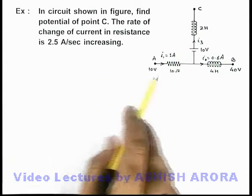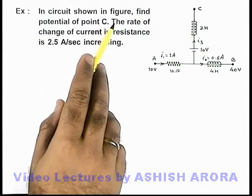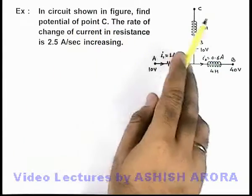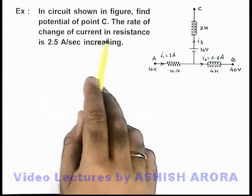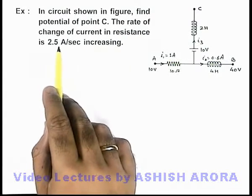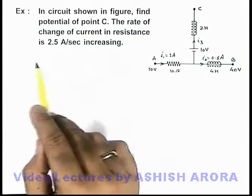In this example, we are given the circuit shown in figure and we are required to find the potential of point C. It is given that the rate of change of current in resistance is 2.5 ampere per second increasing.